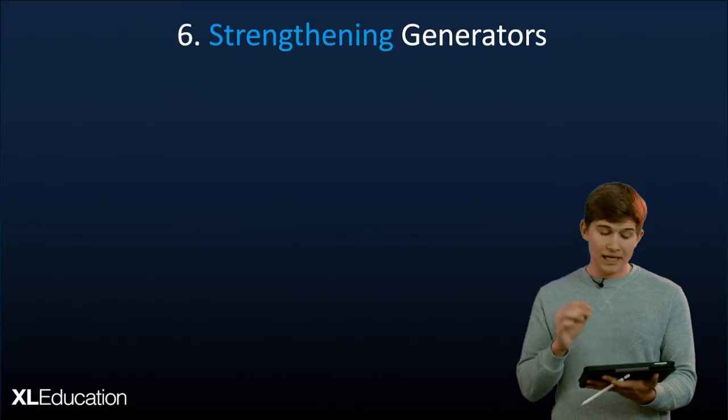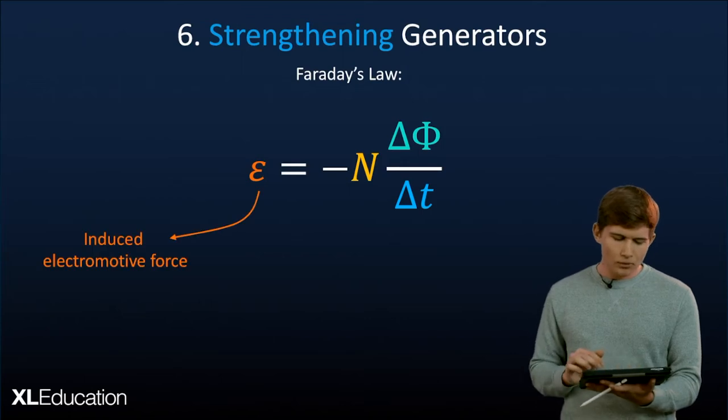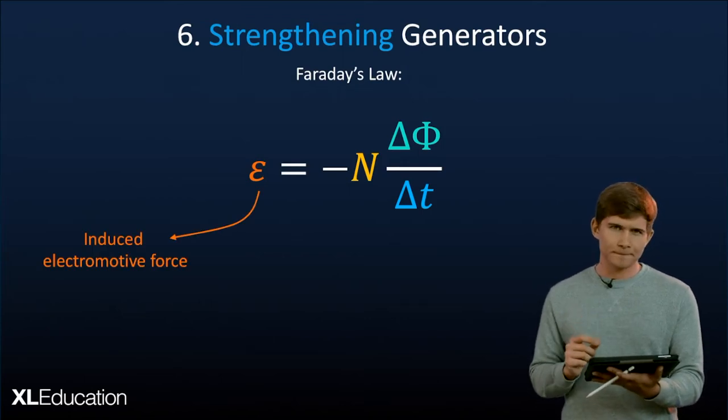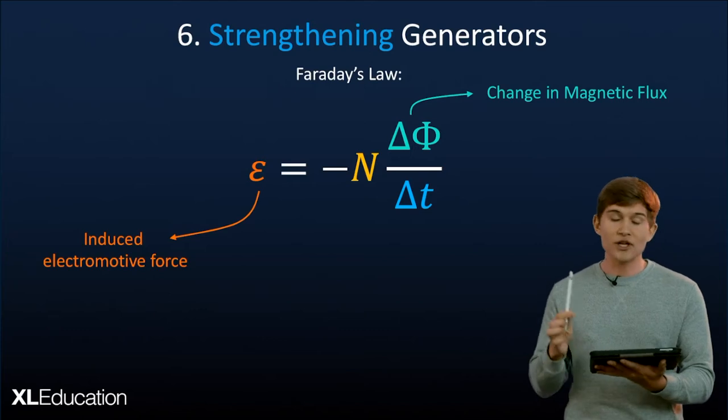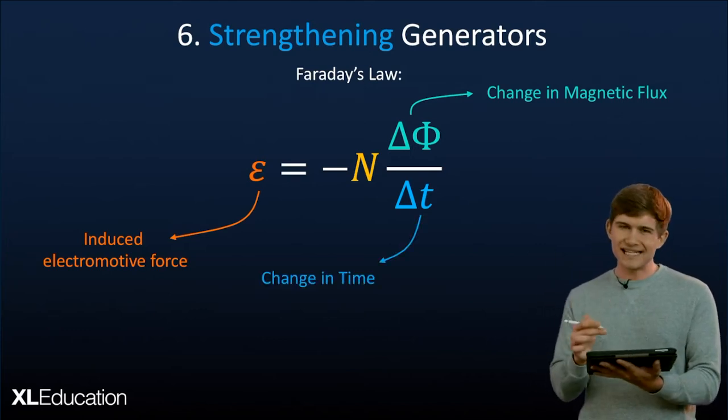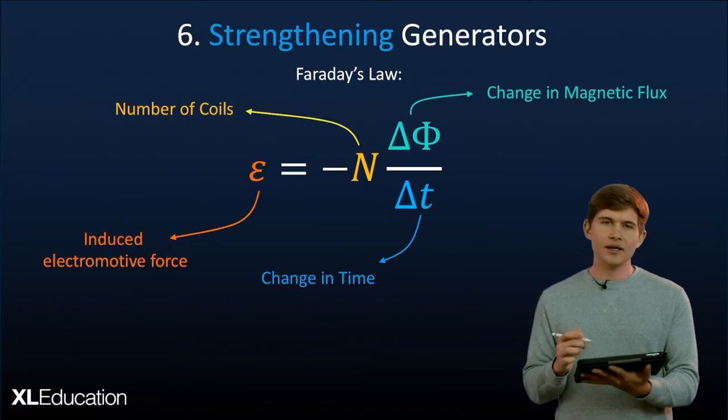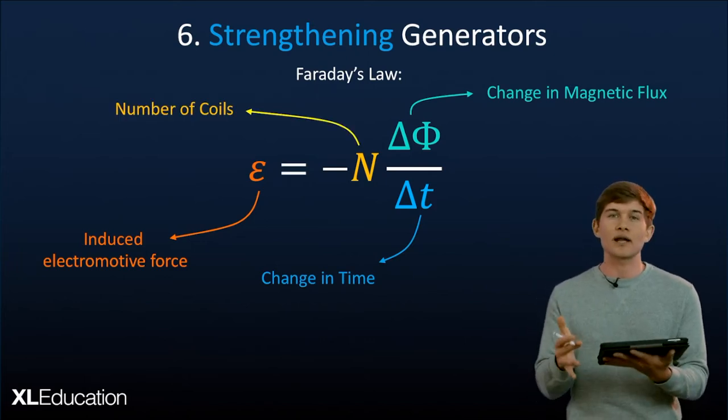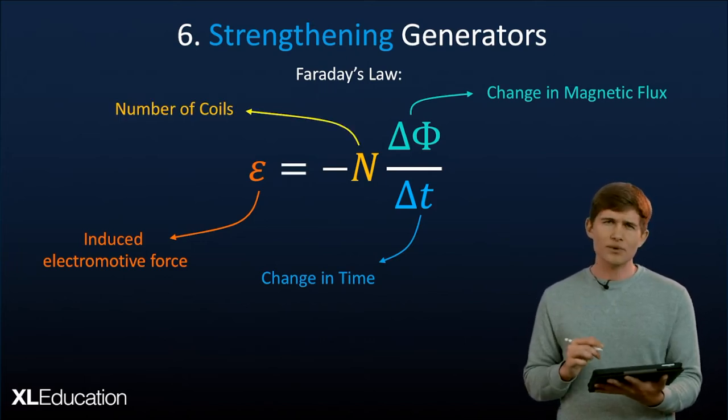Well there's one more thing we need to look at for generators before we finish and that's how to strengthen generators. And to understand this better let's quickly review Faraday's law in totality. Well we remember the induced EMF is our E and then we remember our change in magnetic flux is given to us by the delta phi. Then using the delta t gives us the change in time and the n gives us the number of coils and that gives us our electromotive force. So there's three ways that we can improve our generator.